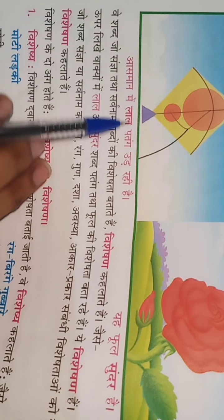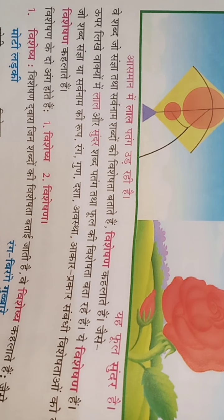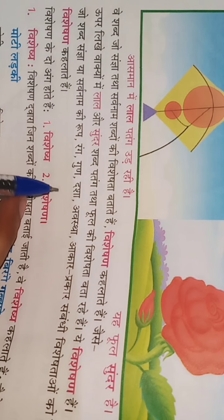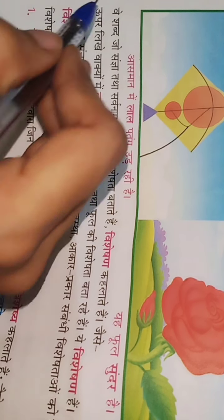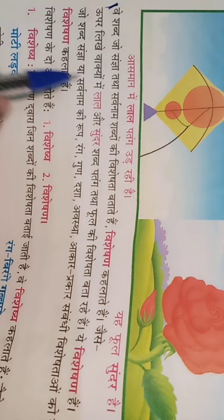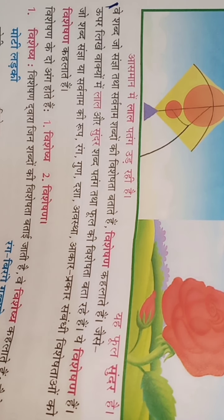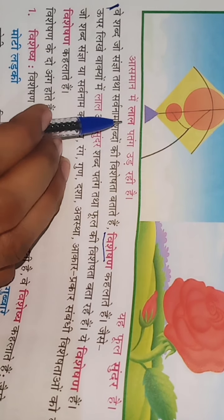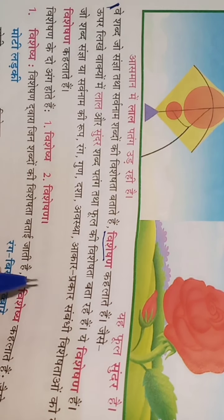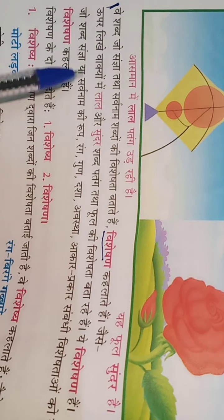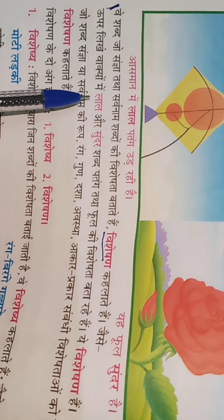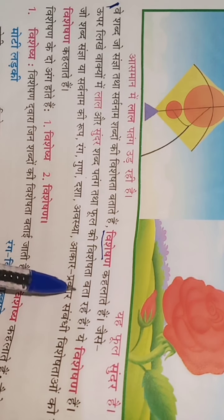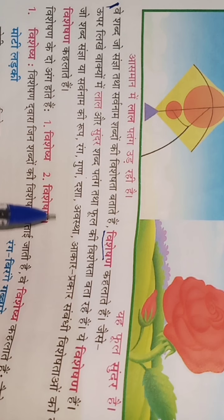Consider the sentences: 'Aasman mein laal patang ud rahi hai' and 'Yeh phool sundar hai.' The word that describes the quality or characteristic of a sangya (noun) or sarvnaam (pronoun) is called Visheshan. So here, 'laal' describes 'patang' and 'sundar' describes 'phool' — these are Visheshan.